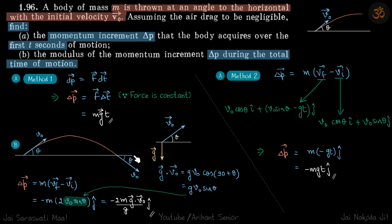So change in momentum is m into vf vector minus vi vector. So horizontal components will cancel out, vertical components will remain, and that will be minus m into 2 into v naught sine theta. So initially it is v naught sine theta up, finally it is v naught sine theta down, so final minus initial is two times v naught sine theta down. And down means minus j cap, so minus 2 times v naught sine theta j cap times m. That is the change in momentum.